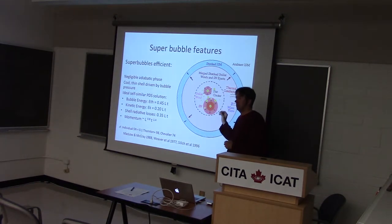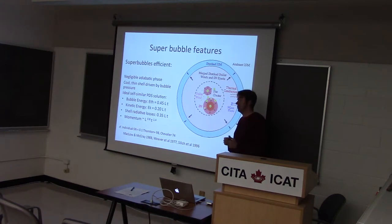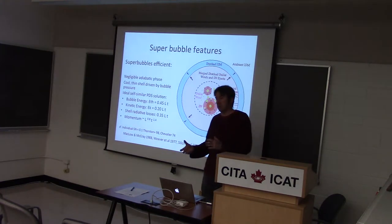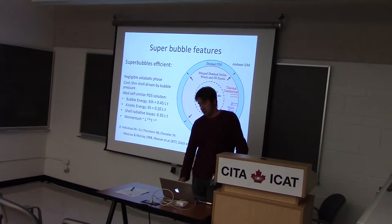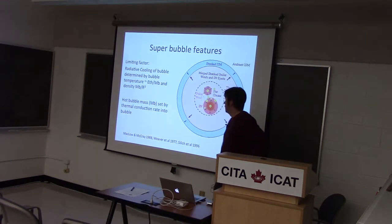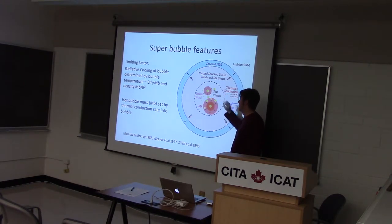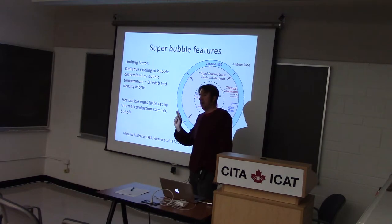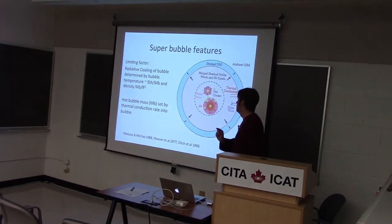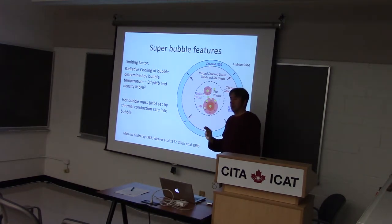Where it gets interesting is how well we approach the continuous input model through individual supernovae, whether this is a reasonable approximation. The real limiter on this thing is cooling interior to the hot bubble, and that cooling depends on two factors: the temperature of the hot bubble and its density. The density is a little complicated because at these temperatures you have a dense shell at a few thousand K right next to stuff at maybe 10^6, even up to 10^7 K.